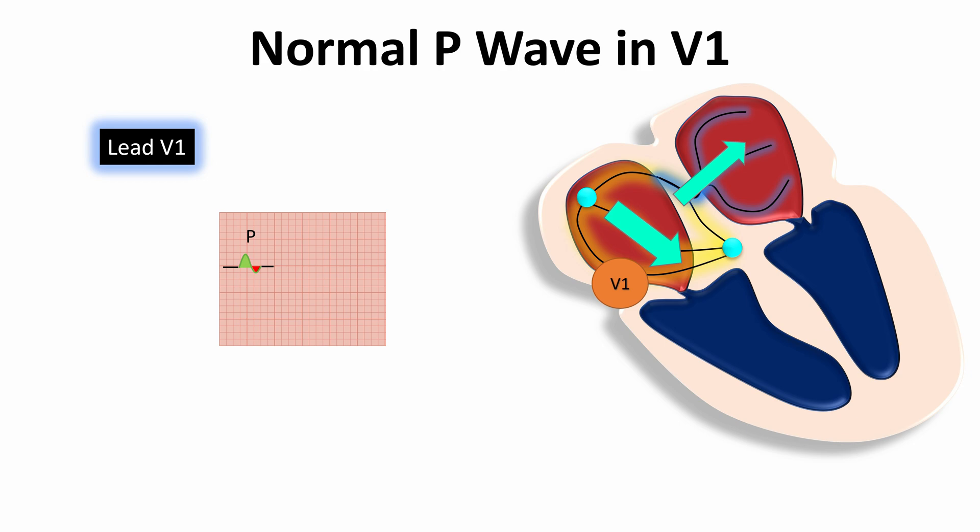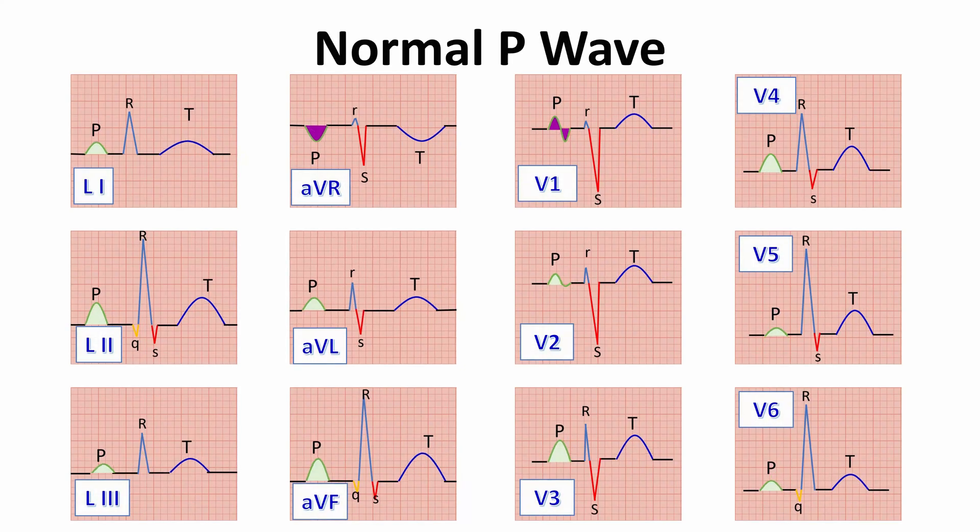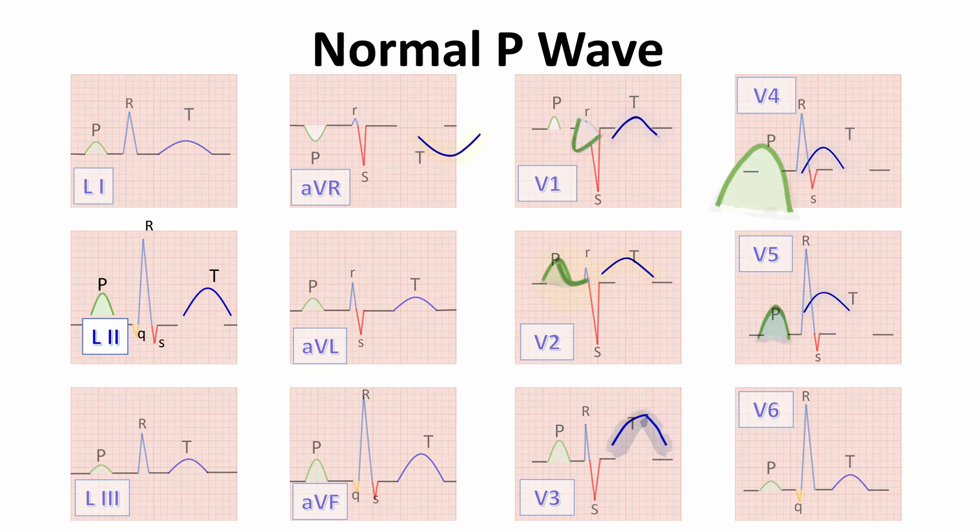So, when we look to the ECG paper, we will see that all leads will have positive P waves except in lead V1 where it is generally biphasic, and in lead AVR where it is totally negative.